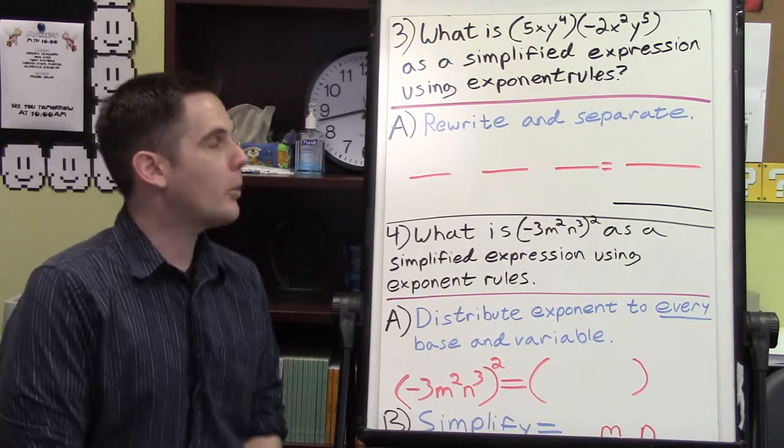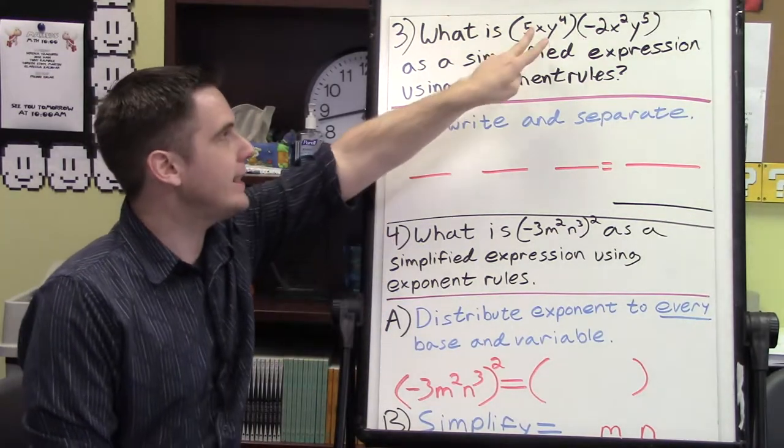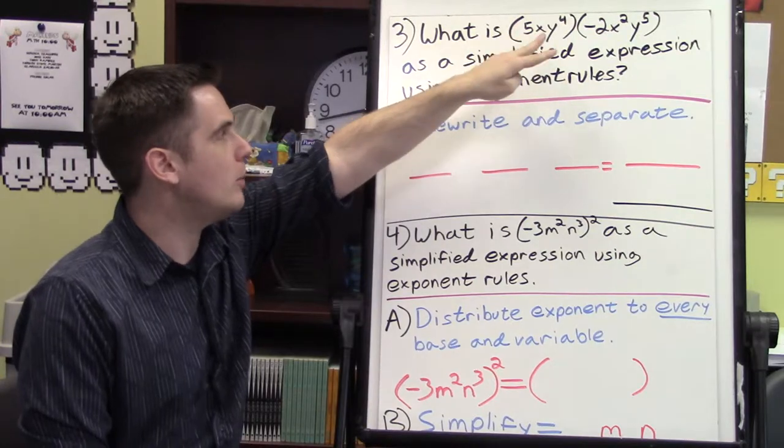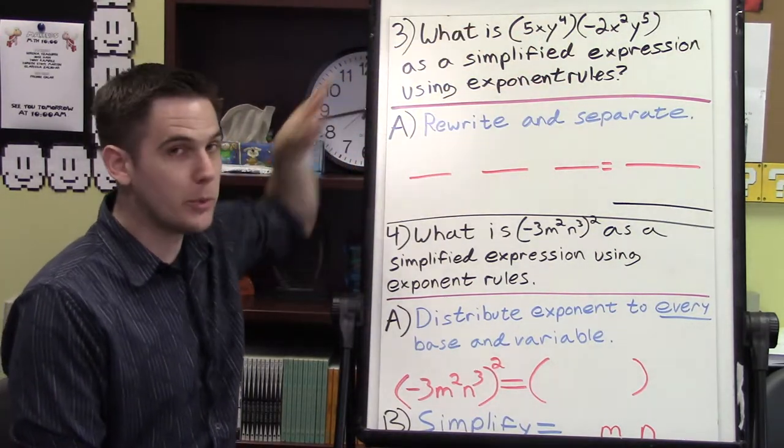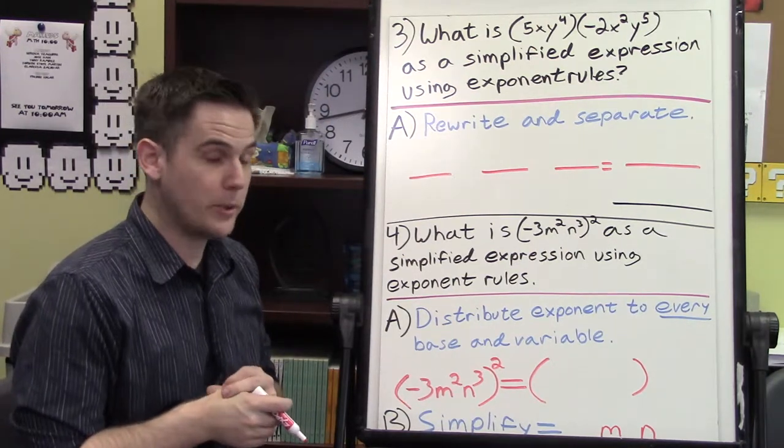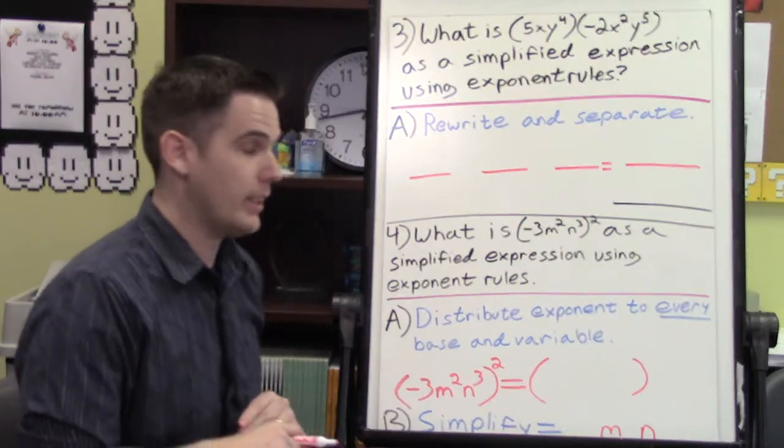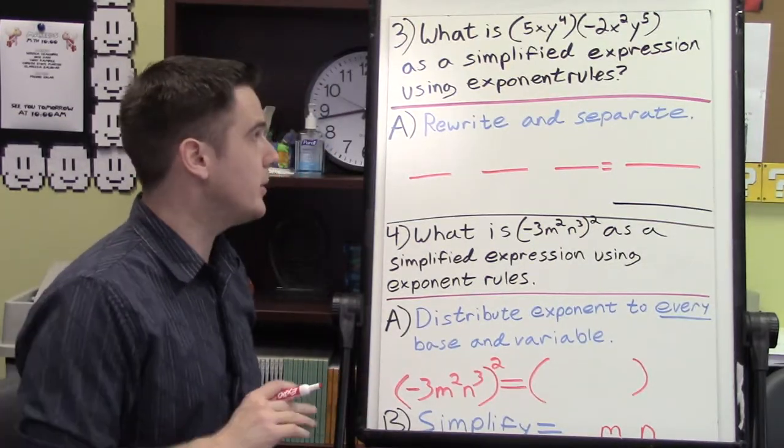But we're not going to use boxes or FOIL. When everything inside is all multiplication, there's no addition or subtraction going on, then we're going to rewrite and separate just like we do with the division. Don't do FOIL or boxes. It'll be a ridiculously hard job, and it's just not necessary to do it that way.